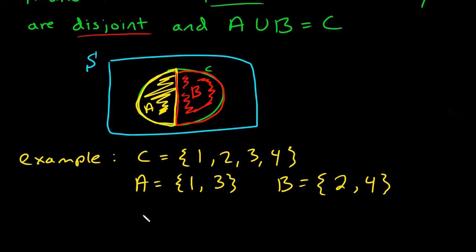Note that A intersection B, so basically A and B, the overlap between these two events, there's no overlap. None of the elements in A are in B, so the intersection is zero, or is the empty set. So that's the definition of disjoint.